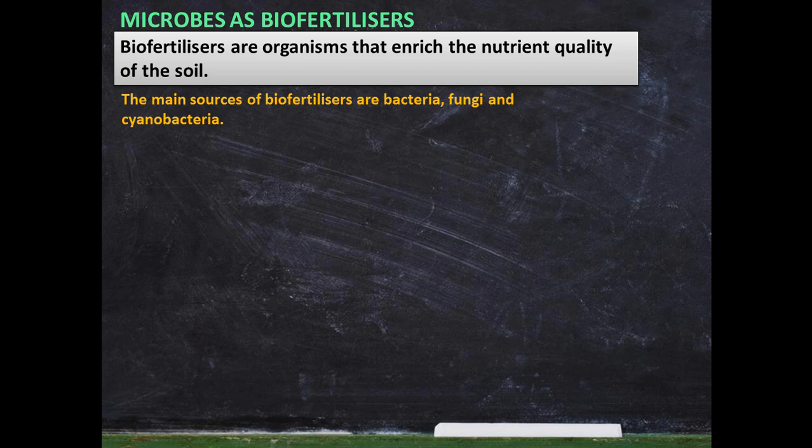Apart from that, Trichoderma species — wherever it is present in the soil — that soil or the plant in association with Trichoderma provides protection to the plants against pathogens. So these are the microbes which can be used as bio control agents instead of chemical fertilizers and insecticides.